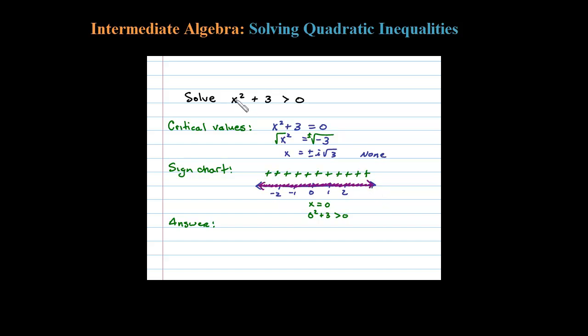Think about it: anything squared will be positive, plus 3 will always be greater than 0. So here's my sign chart with my answers shaded in.